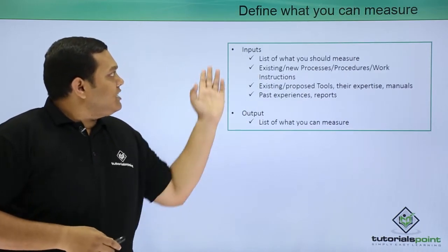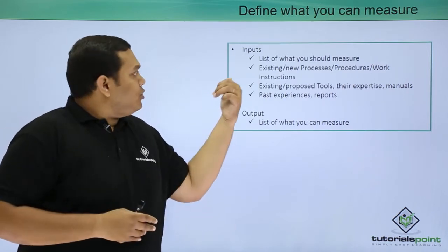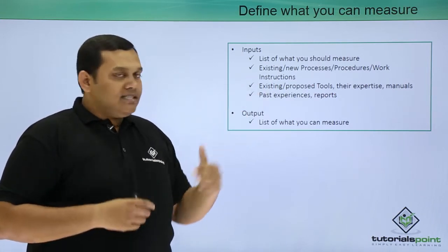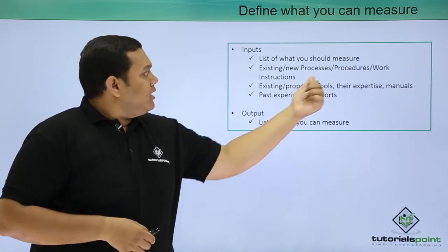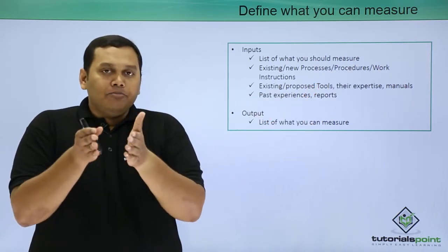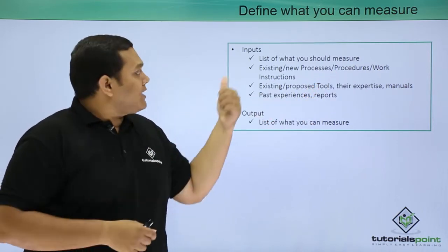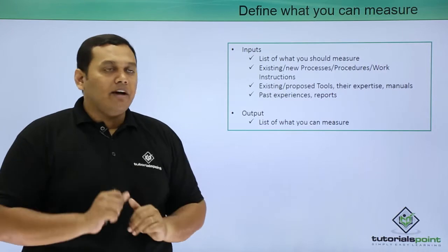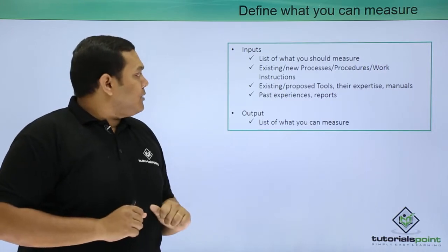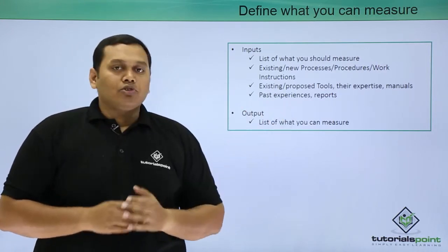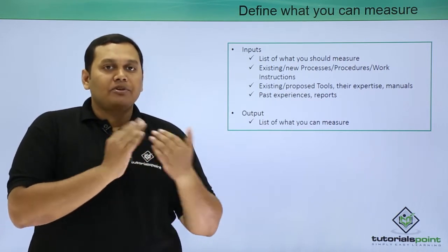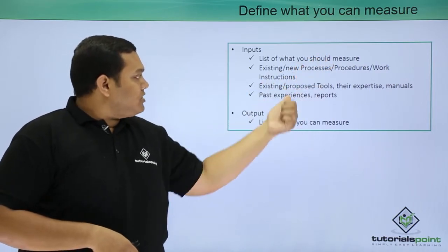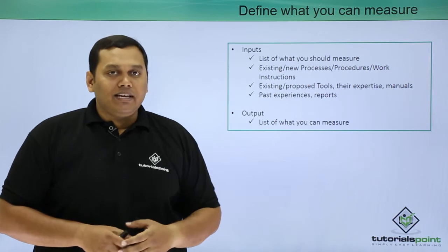Step 2 is define what you can measure. The inputs here are the list of what you should measure, as well as existing processes, procedures, and work instructions. Existing or proposed tools, their expertise and manual details, and past experience and reports are also inputs. The output of this step is a clear list of what you can measure.